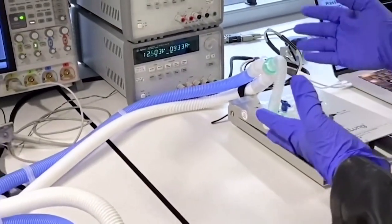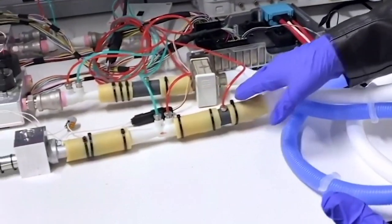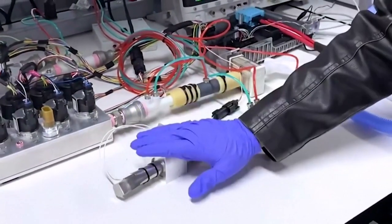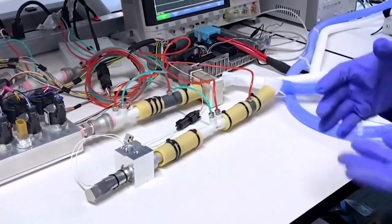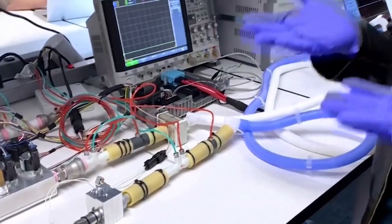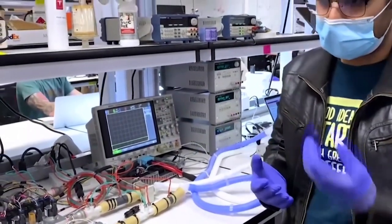Then the air goes through a valve and then goes to another sensor, and then goes to a PEEP valve which is used to control the protection of the lungs. So this creates positive pressure on the lungs which helps the patient breathe.